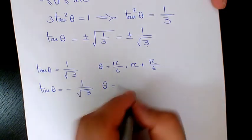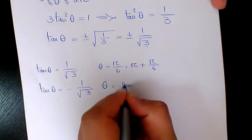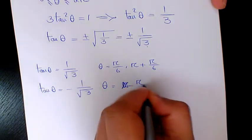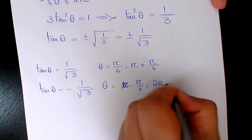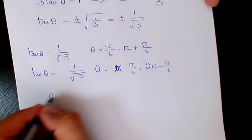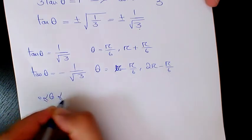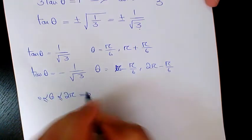And here we have negative, but it's going to be in quadrant 2 and quadrant 4. So it's going to be pi minus pi over 6 and 2 pi minus pi over 6. Basically, from 0 to 2 pi we have four answers, two in here and two in here.